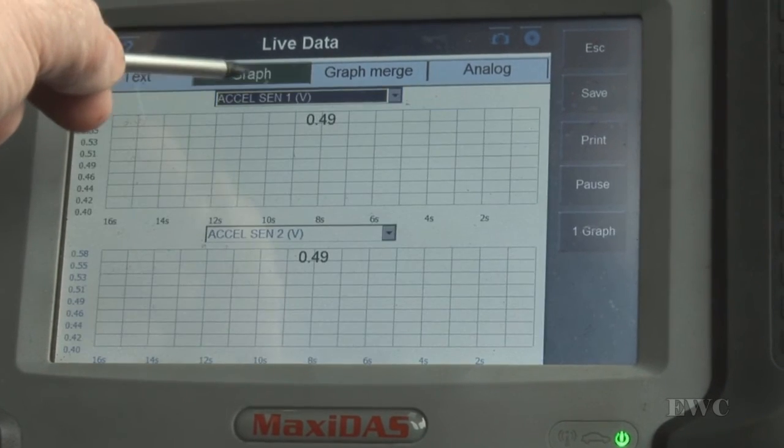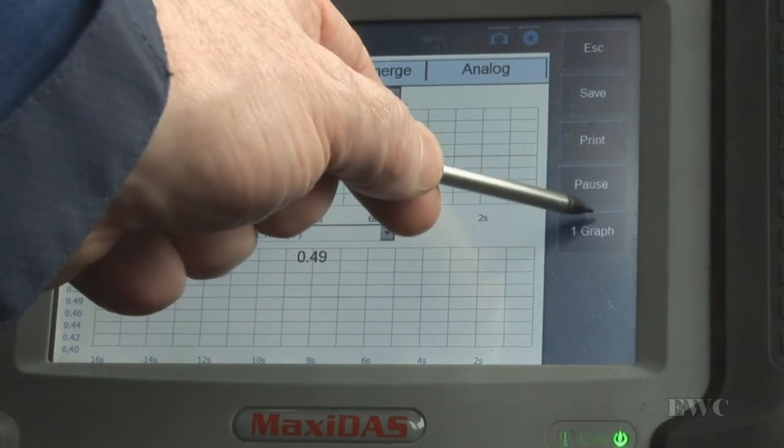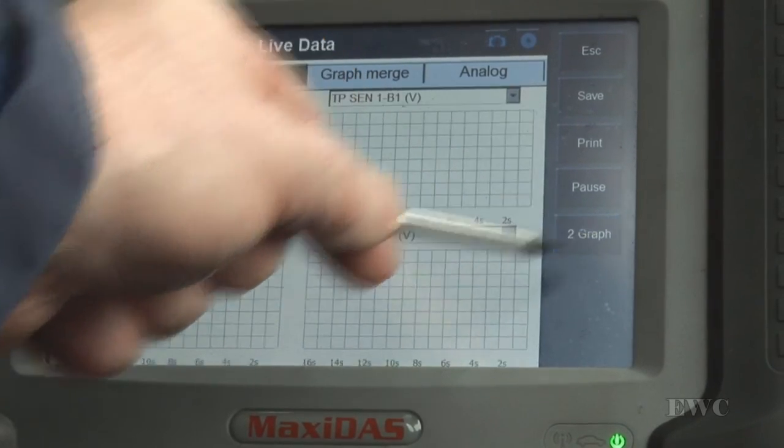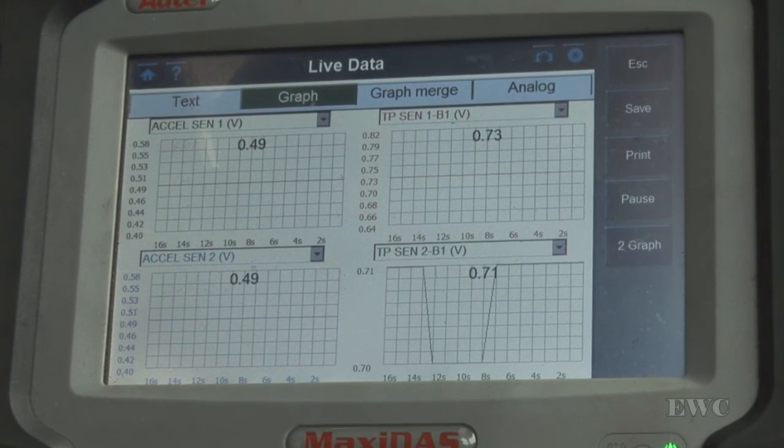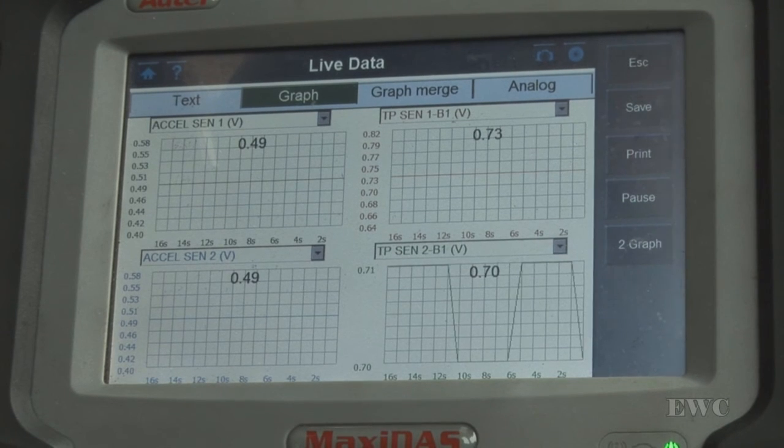Do a graph. We have our four data parameters selected and the car is in gear.